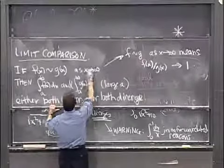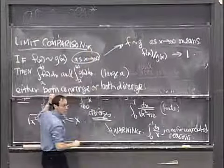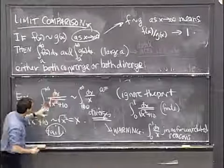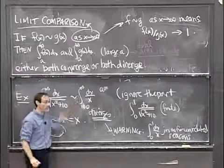So again, as x goes to infinity, that's the limit we're talking about, the limiting behavior. And we try not to pay attention to what's happening for small values of x.